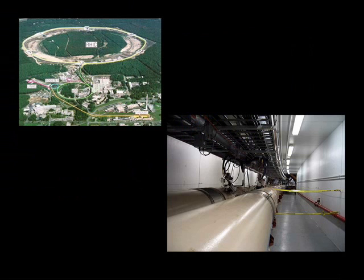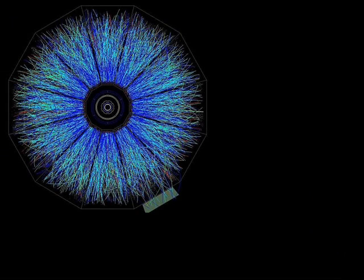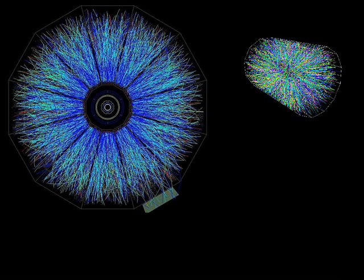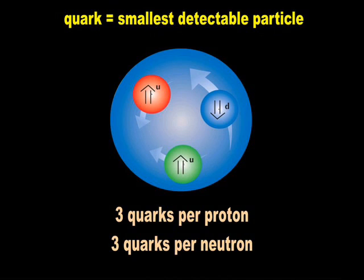The Brookhaven National Accelerator alleges that this picture shows the debris from a collision of two gold ions. It is quite easy to show that this is not true. The mathematicians tell you that they cannot detect anything smaller than a quark because they don't have enough energy to peer beyond this level. There are allegedly three quarks per proton and per neutron.